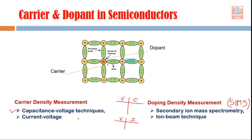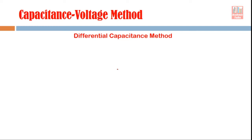In the next lecture we will cover this technique in more detail. Today's lecture is focused on the capacitance-voltage technique for finding out carrier density — the free carriers moving in the semiconductor, which may be holes or electrons depending on whether it is a p-type or n-type semiconductor. The name of the technique where we use capacitance-voltage data to find out carrier concentration is the differential capacitance technique.